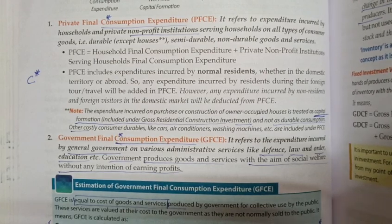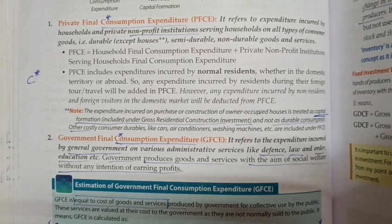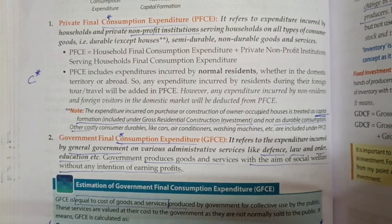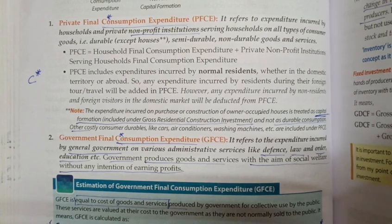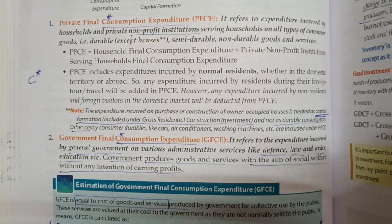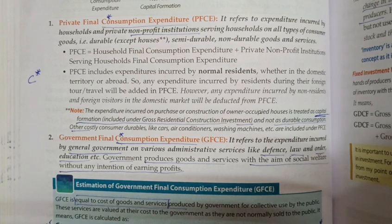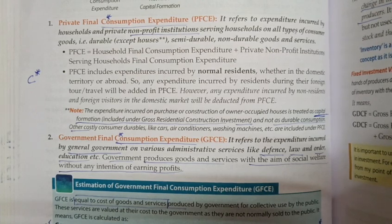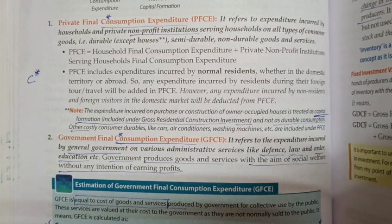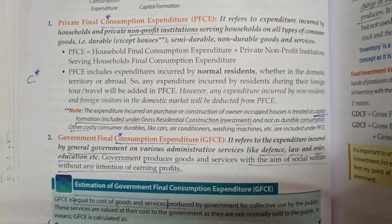Gross fixed capital formation includes three sub-components: gross business fixed investment, gross residential construction investment, and gross public investment.